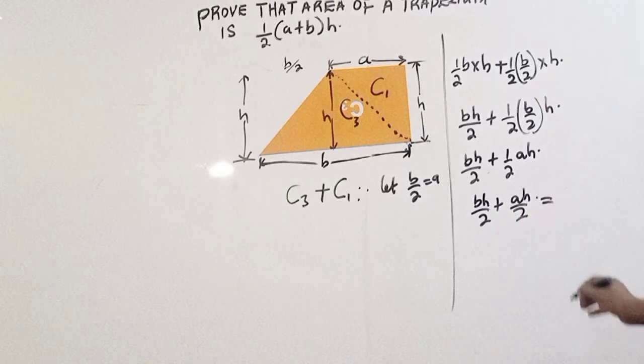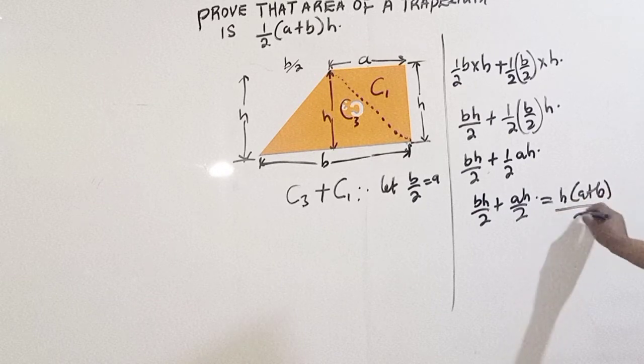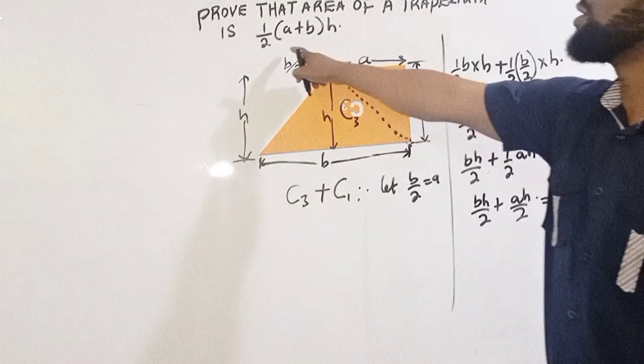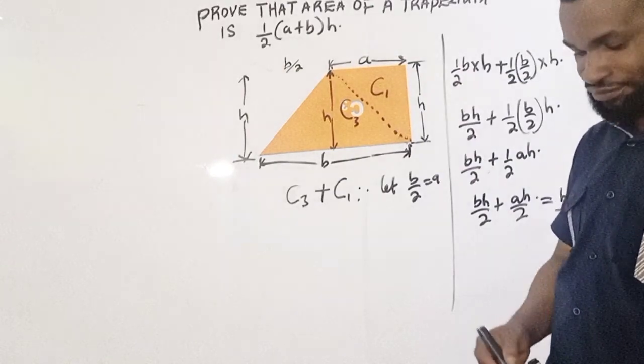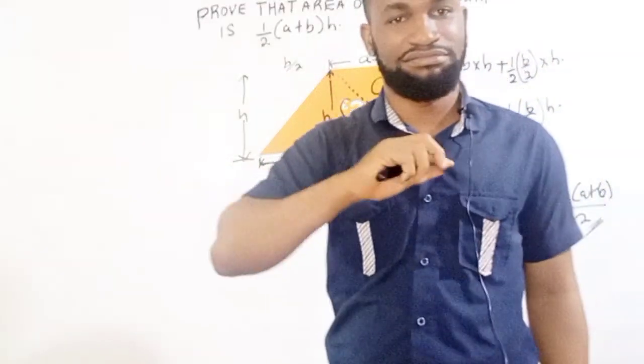Which is the same thing as saying h over 2 times a plus b, which is the area of the trapezoid. Thank you.